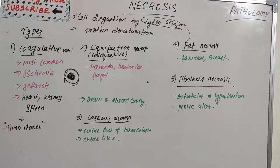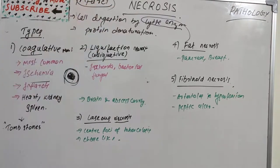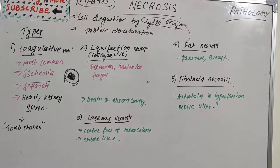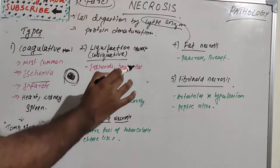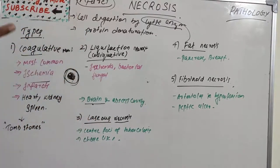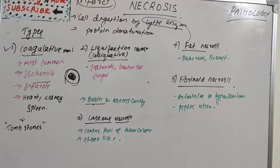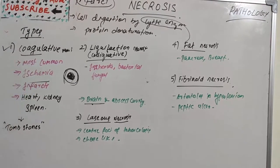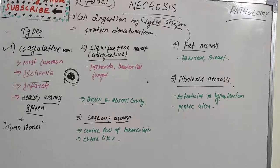Coagulative necrosis is the most common type of necrosis. The main reason is ischemia — the stoppage of blood flow — and very rarely bacterial or other chemical agents. It is characteristic of infarcts in all solid organs except the brain, where liquefaction necrosis occurs instead. The most common organs affected by coagulative necrosis are the heart, kidney, and spleen.